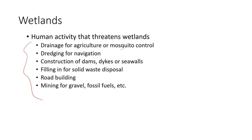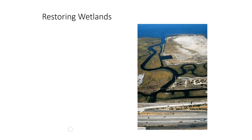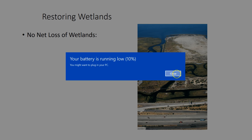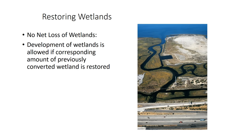We drain wetlands for agriculture and mosquito control, dredge them for navigation, construct dams, dikes and seawalls, fill them in for solid waste disposal, build roads, and use them for mining gravel and fossil fuels. As a result, they're shrinking by about 58,500 acres per year. We've put legislation in place that says we're no longer allowed to have a net loss of wetlands. If you develop on a wetland, you need to restore an equal-sized wetland somewhere else — that's the no net loss philosophy.